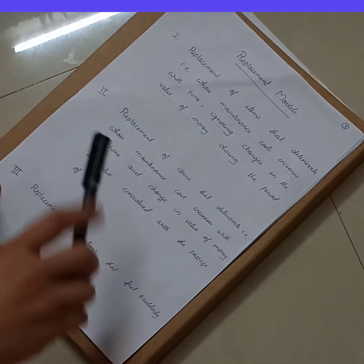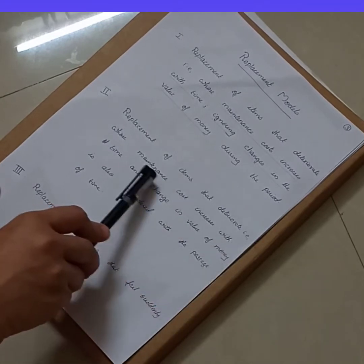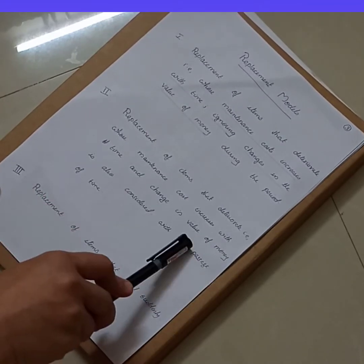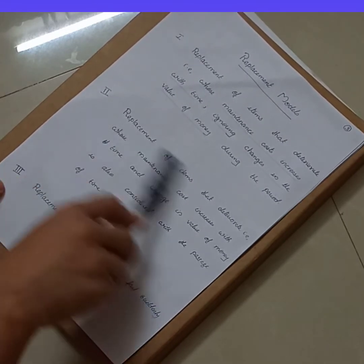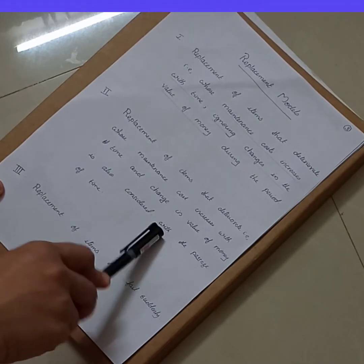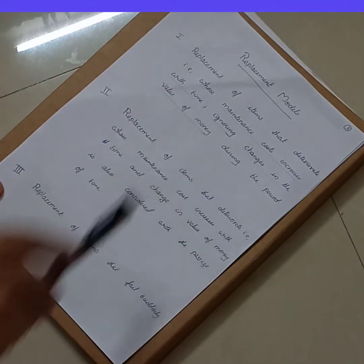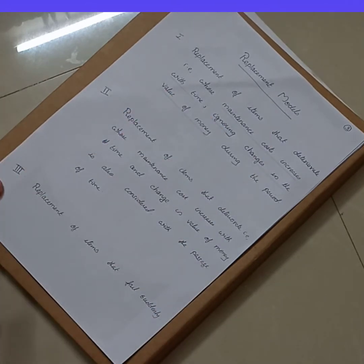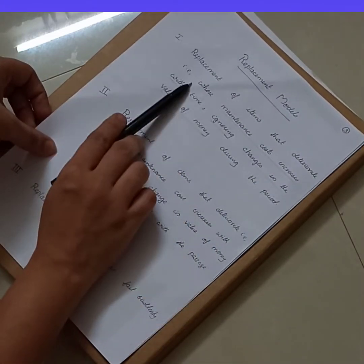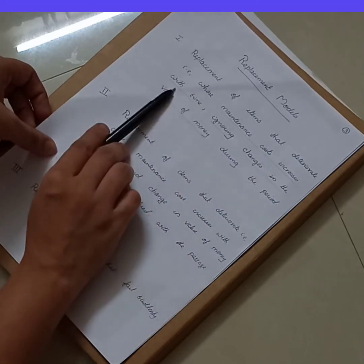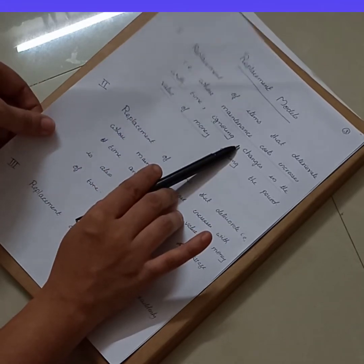The second model is replacement of items that deteriorate, whose maintenance cost increases with time, and where the change in value of money is also considered with the passage of time. The third model is replacement of items that fail suddenly. We will deal with each model in detail with the help of an example. Let's first discuss the first model — replacement of items that deteriorate over time — ignoring the value of money.